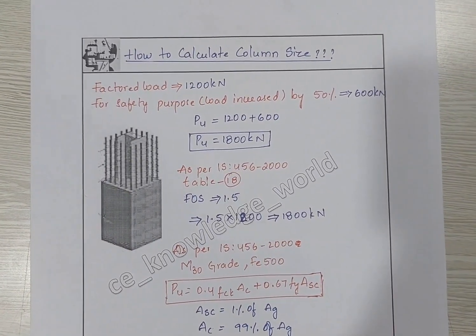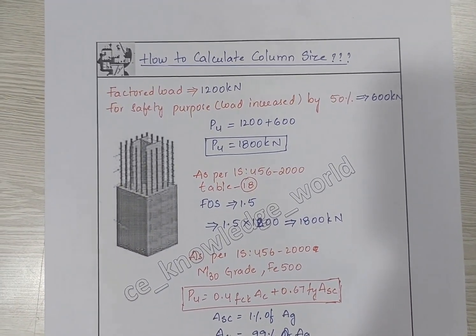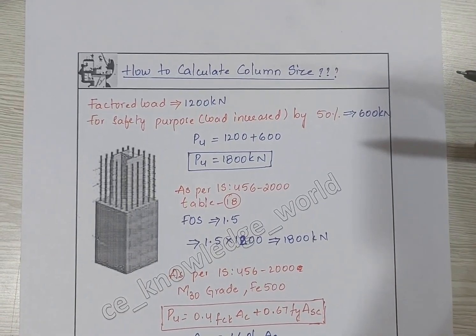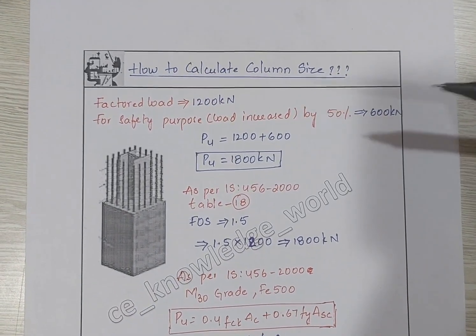Hello everyone, today in this video we will learn how to calculate the size of a column. Let us consider the factored load is 1200 kilonewtons. For safety purposes, we increase this load by 50 percent, which is 600 kilonewtons.